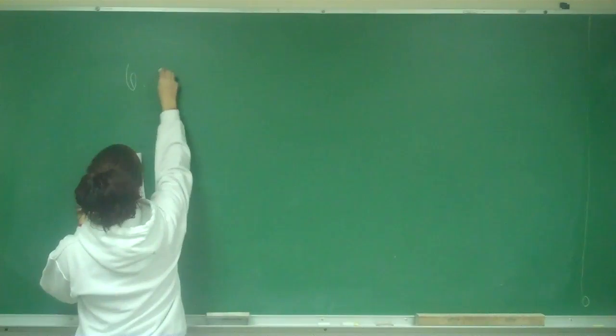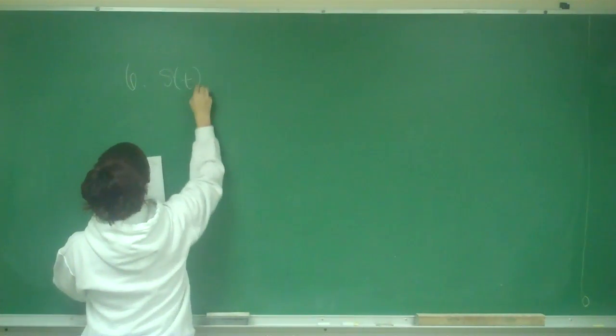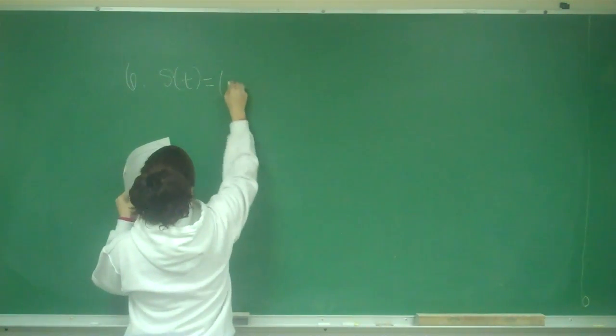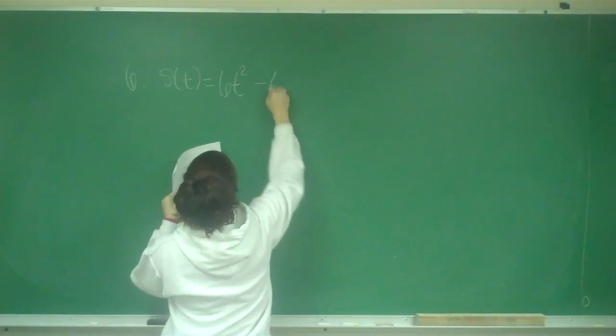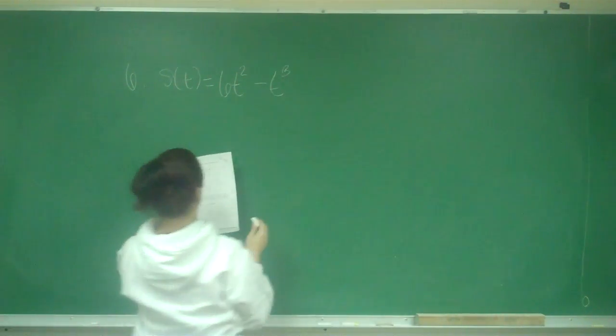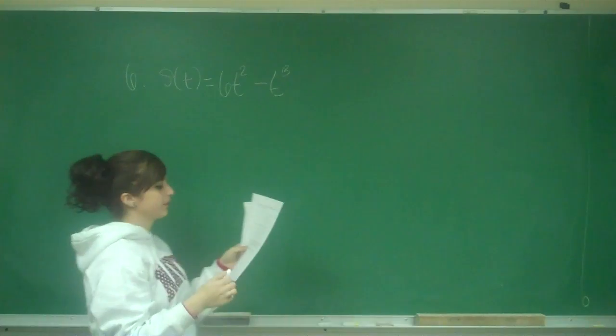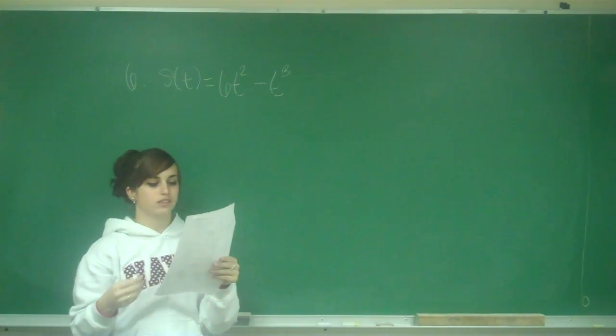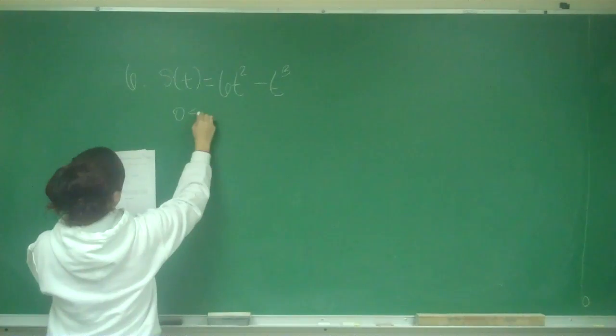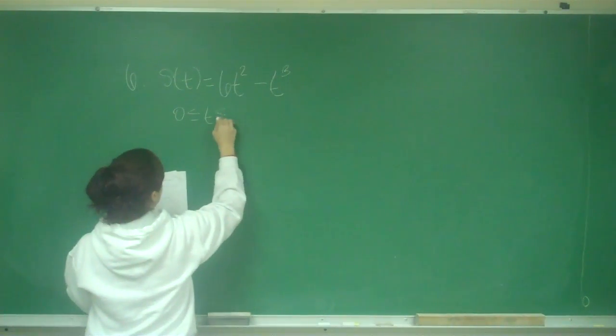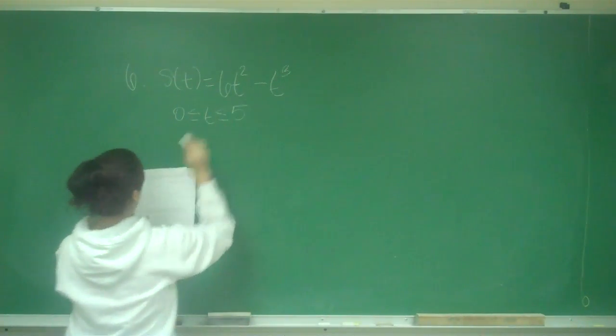Number 6. So we have that S of t is equal to 6t squared minus t cubed. It says find the displacement of the particle and the total distance traveled on the interval of 0 is less than or equal to t is less than or equal to 5.